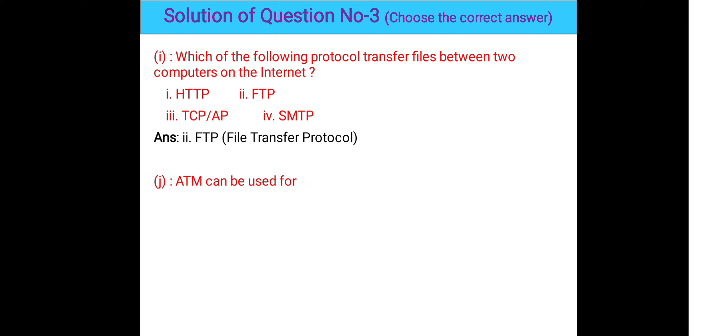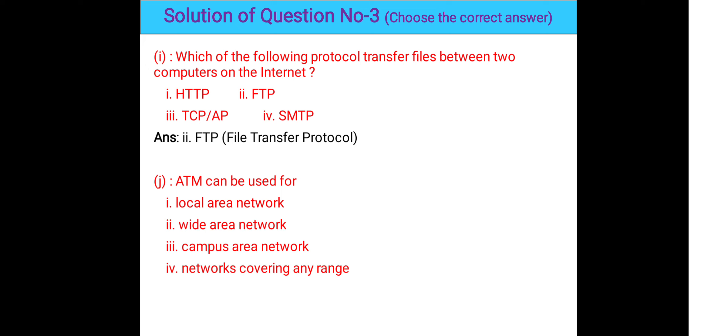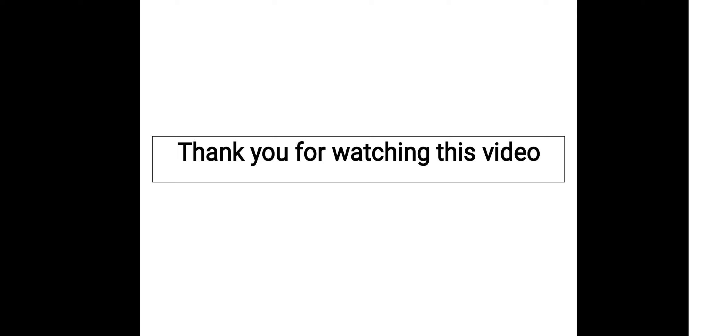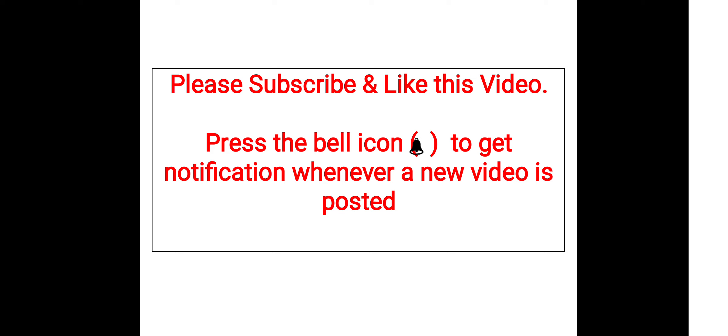Question 3i: ATM can be used for local area network, wide area network, campus area network, or network covering any range. The correct answer is option 4 — network covering any range. ATM stands for Asynchronous Transfer Mode, used for data transmission through computer networks. Thank you for watching. Please subscribe, like, and share these videos with your friends.